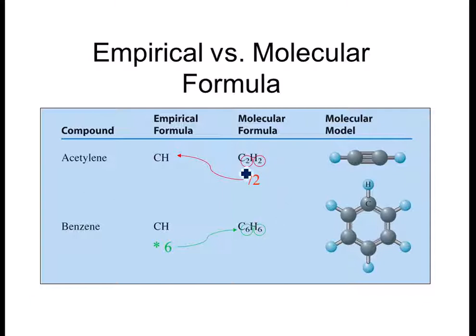The number that I can divide both of these by is two. So from the molecular formula, I divide both by two to get the empirical formula of one carbon and one hydrogen. Or if I have benzene, which also has empirical formula of C and H, if I multiply all of it by six, then I end up with C6H6, which is its molecular formula.